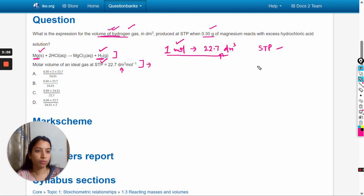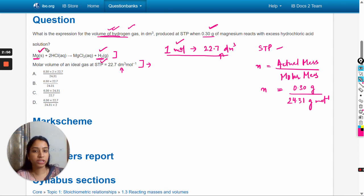For the number of moles of magnesium, we will use this formula: n (number of moles) equals actual mass divided by molar mass. The actual mass is 0.30 grams, and the molar mass is 24.31 grams per mole. So the number of moles of magnesium is 0.30 divided by 24.31.